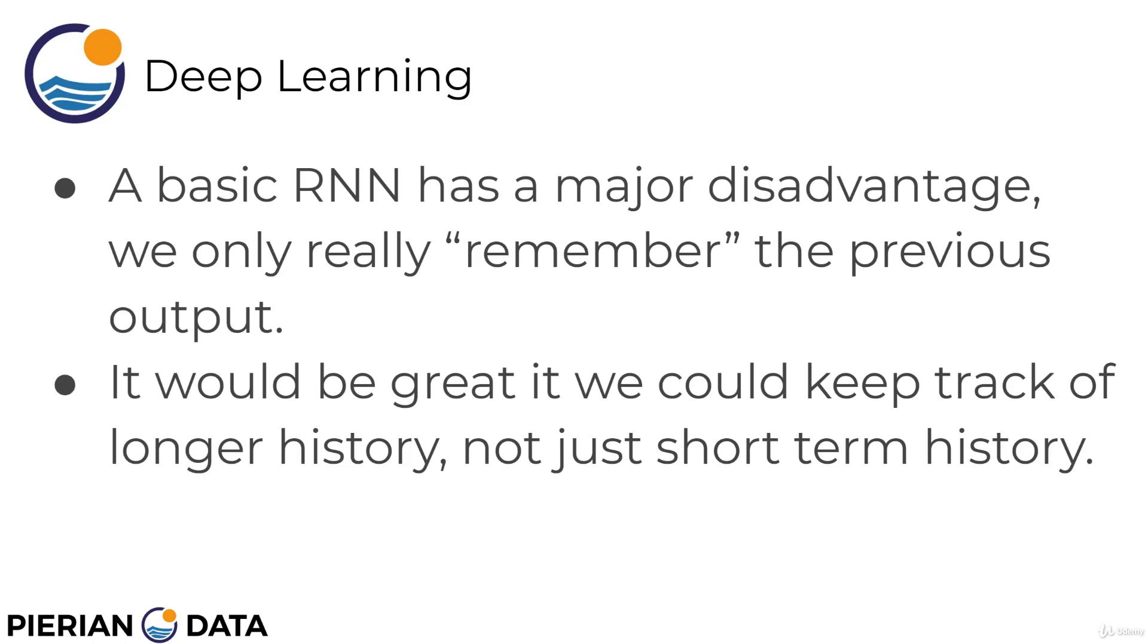A basic recurrent neural network also has a major disadvantage though. We only really remember the previous output. If we think back to that unrolled diagram, we were only feeding in the output of one time step into the past. And what happens is, if we have really long histories, we begin to start to forget the older historical samples, since we're only really looking at the output of the last previous t-1. And it would be really great if we could keep track of longer history, not just that short-term memory.